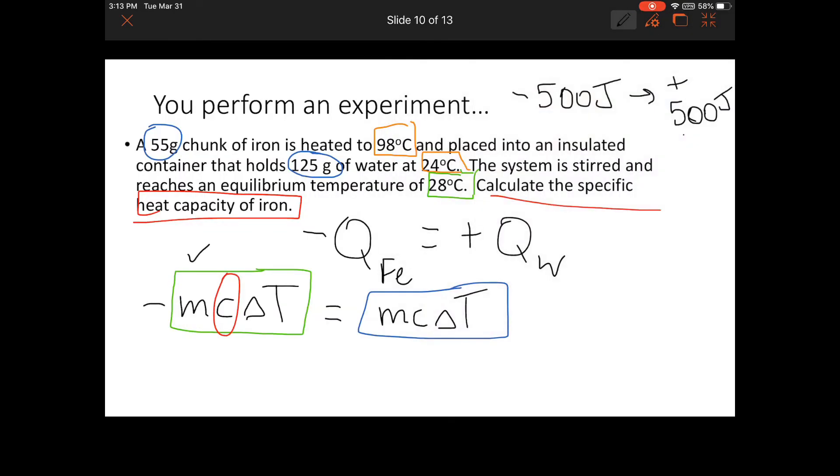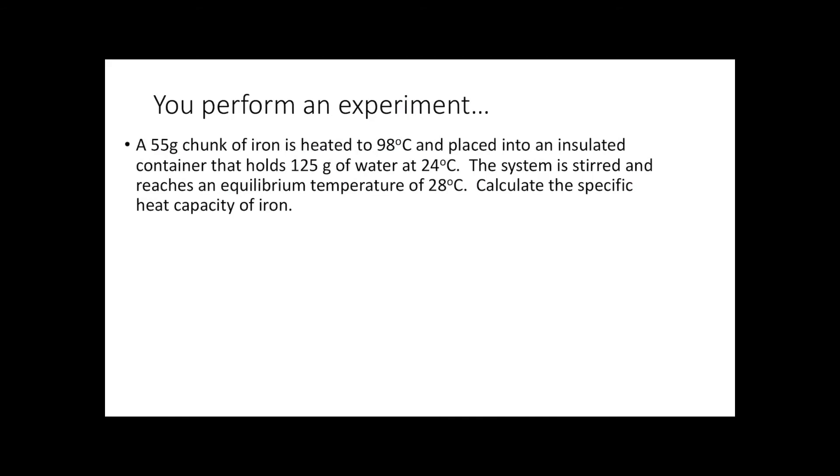I have my mass of iron and temperature change from 98 to 28. I have my mass of water and the specific heat capacity of water is a given value. I also have the temperature change of water, which goes from 24 to 28, so the water rises 4 degrees. Let's start to fill this in.